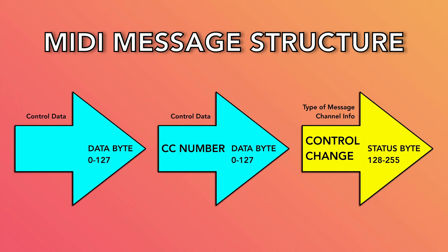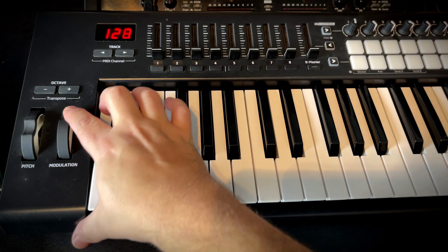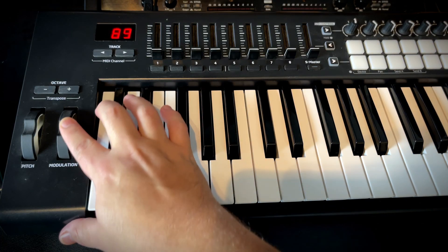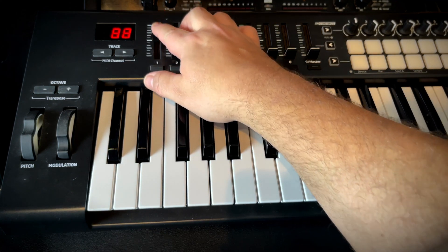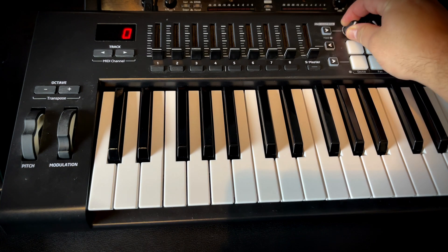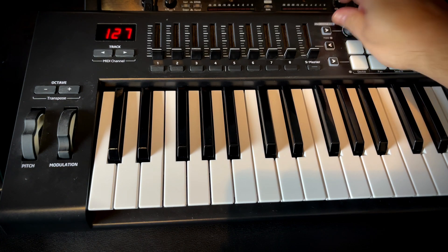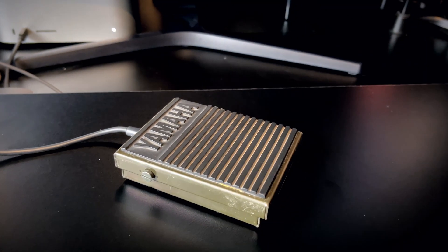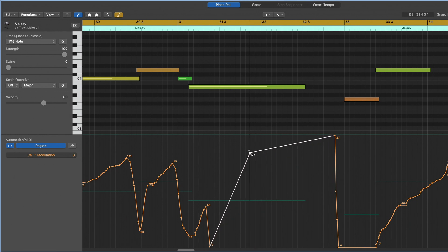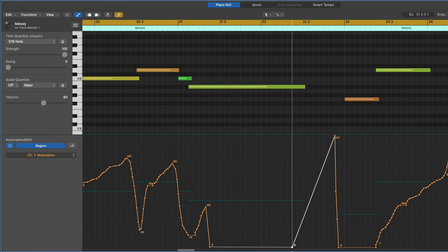What's more important is the second data byte value, which designates the position of the CC. With mod wheel pushed all the way up, that's 127; all the way down is 0. With faders, all the way up is 127, down is 0. With knobs, all the way to the left is 0, all the way to the right is 127. With switches like sustain pedal, pressing is 127 and releasing is 0. This CC positional data can be written into Logic or any other DAW as MIDI automation, which we'll also cover in this course.